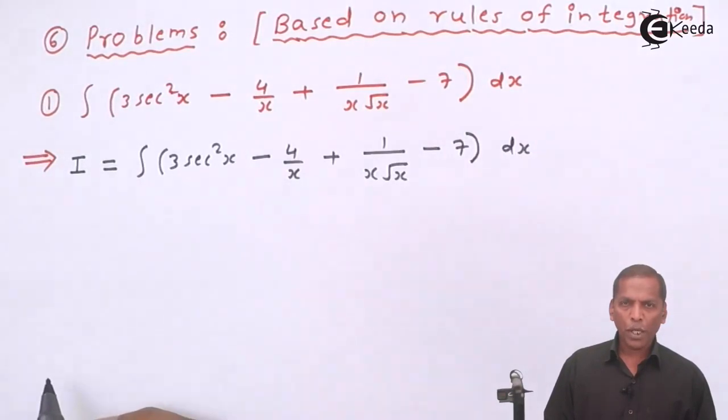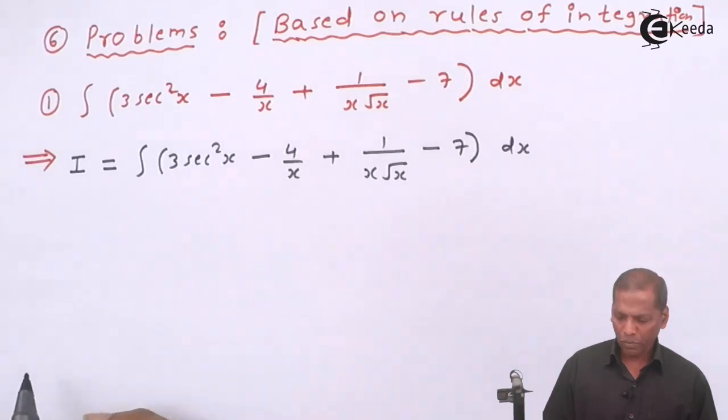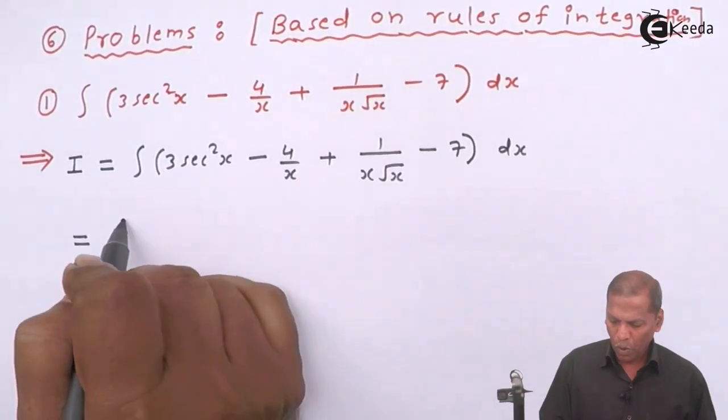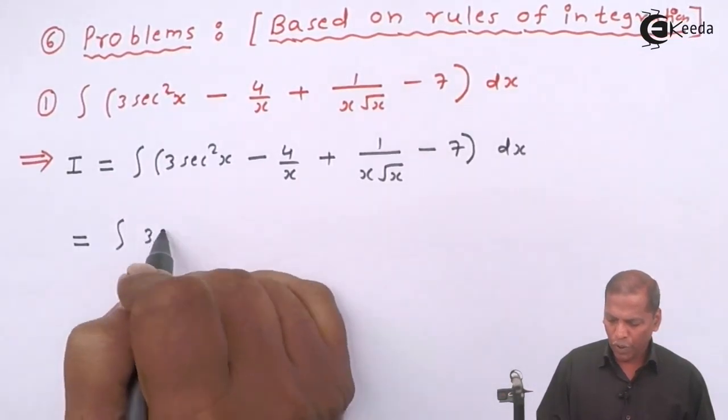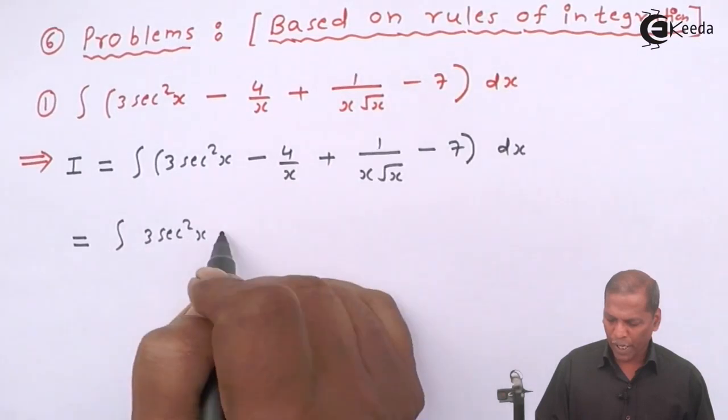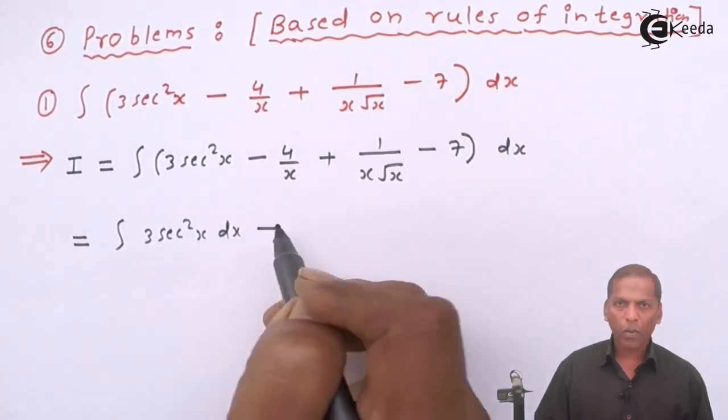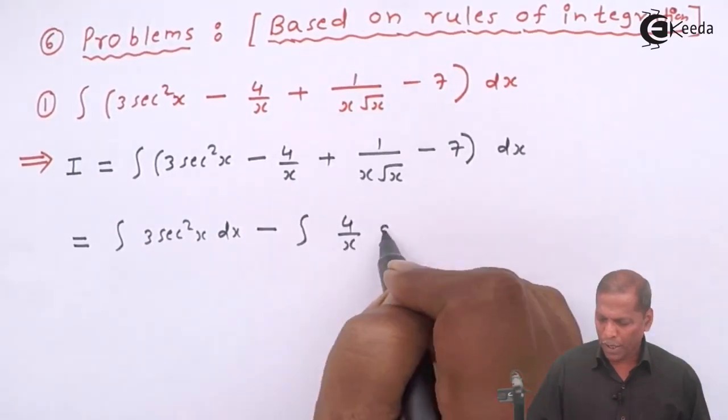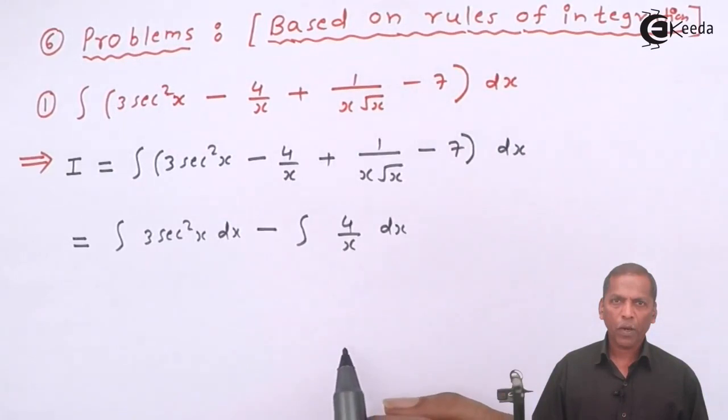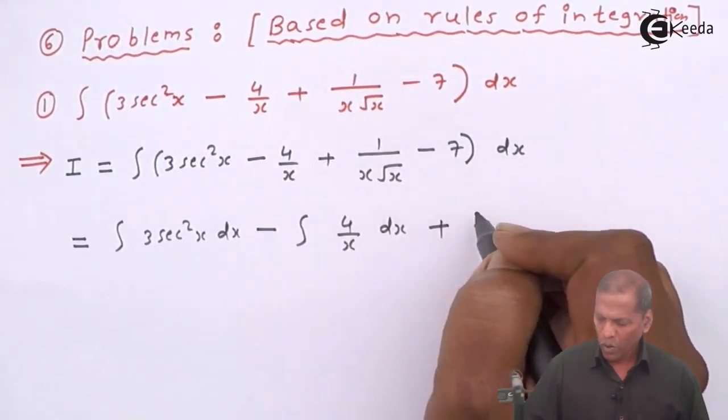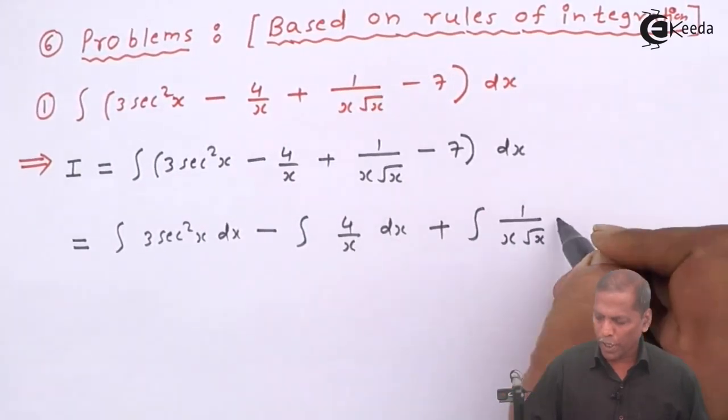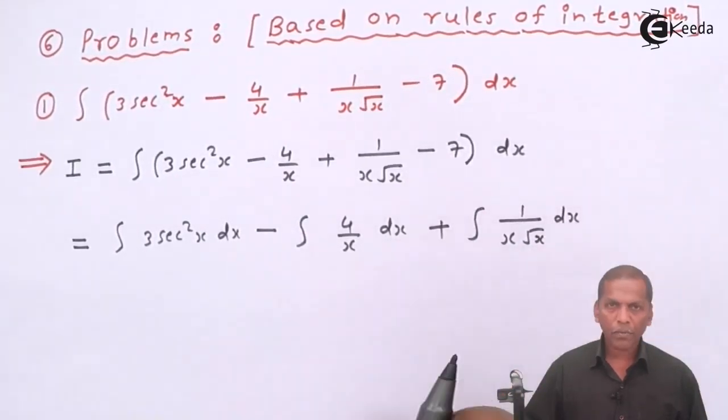By using rules of integration, the next step will be is equal to integral 3 into sec square x dx minus integral 4 upon x dx plus integral 1 upon x into root x dx.